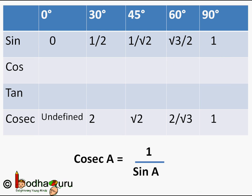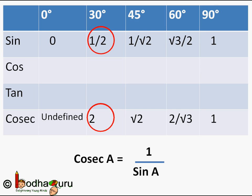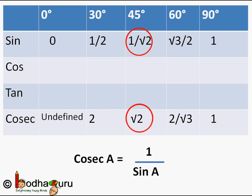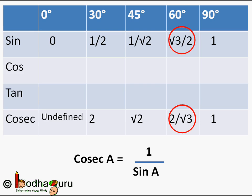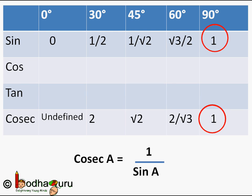Now let's find cosec values. cosec(a) = 1/sin(a). cosec(0°) = 1/0, which is undefined. cosec(30°) = 1/(1/2) = 2. cosec(45°) = 1/(1/√2) = √2. cosec(60°) = 1/(√3/2) = 2/√3. cosec(90°) = 1/1 = 1.